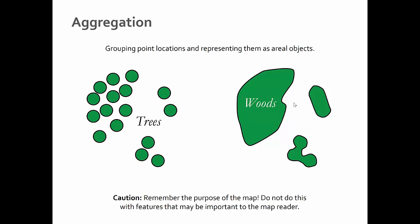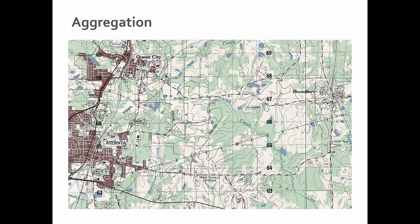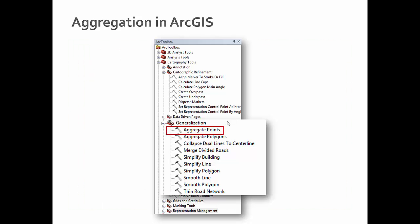Aggregation is different from amalgamation in the sense that you're grouping point locations and representing them as areal objects. In cartography we distinguish between the two, even if ArcGIS uses the same term for both. It's the idea of seeing the forest for the trees — you have a bunch of trees, but that level of detail isn't needed, so you create a polygon representing where the woods are. You see this all the time, for example with forests on USGS topographic maps.